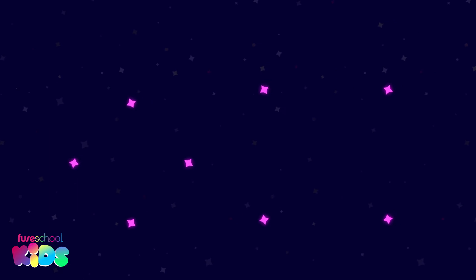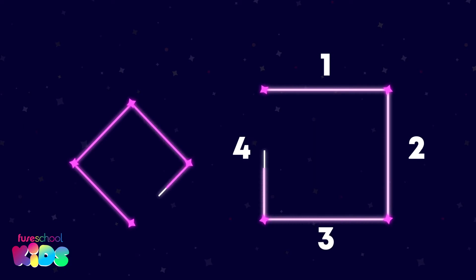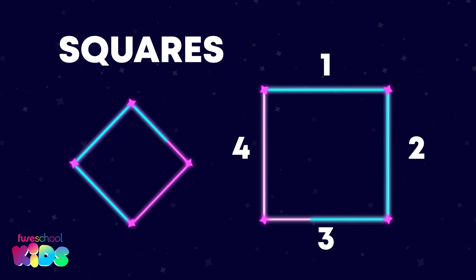Let's discover another shape. These stars make shapes with 1, 2, 3, 4 sides. They are squares. Squares have 4 sides that are the same or equal length.